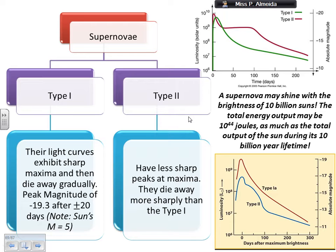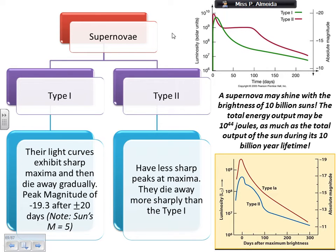Type 2 supernovae have a less sharp peak at their maximum, so they are not as bright in terms of absolute magnitude. They also die away more sharply than type 1. So a type 2 is not as bright at the peak, and then it declines more sharply in the beginning. Note that the type 2 is actually not as bright as type 1.